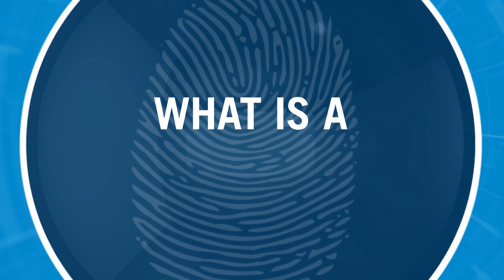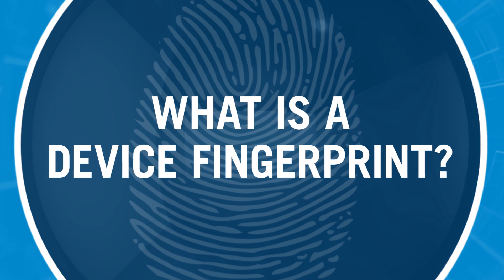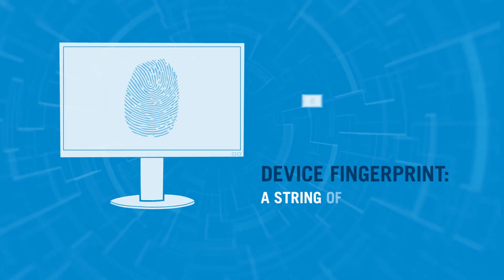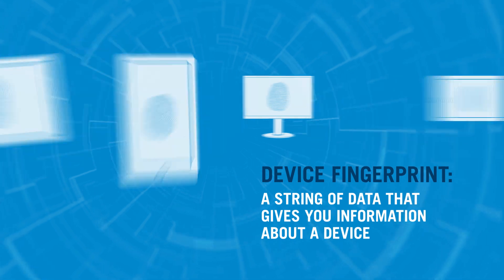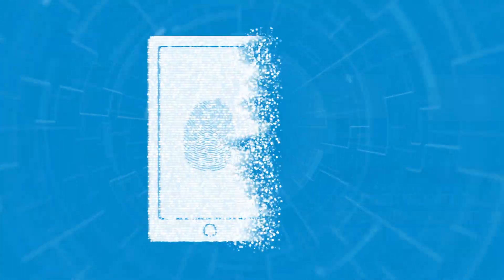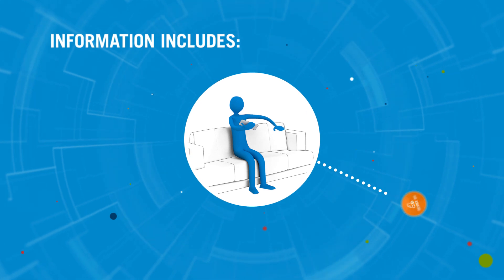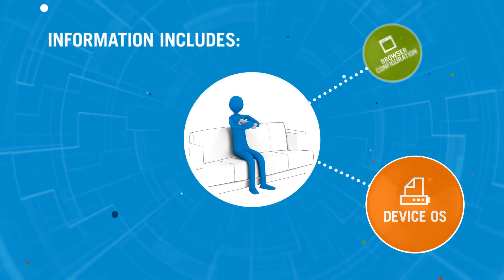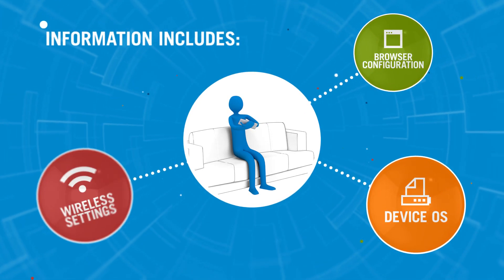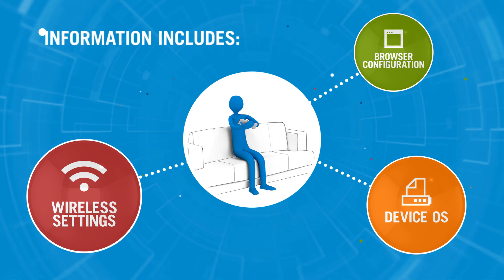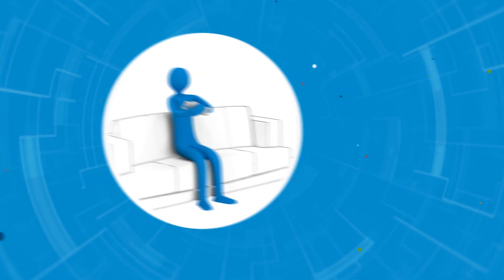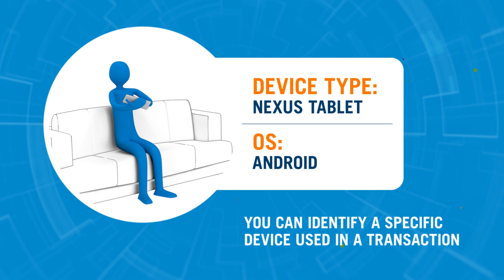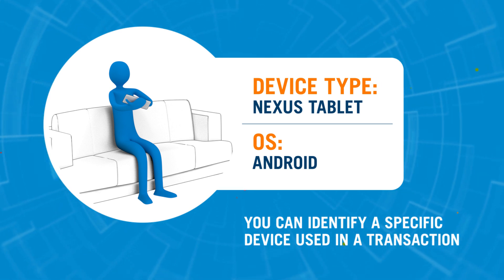But what actually is a device fingerprint? A device fingerprint is a string of data that gives you information about a device. That information can include, but isn't limited to, the operating system on the device, the device's browser configuration, and the device's wireless settings. This unique combination of data allows you to identify a specific device used in a transaction.